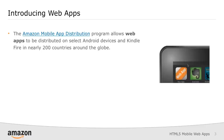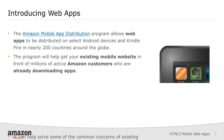For those not familiar, the Amazon mobile app distribution program is available in nearly 200 countries around the globe. It allows you to submit Android apps for both Android devices and Kindle Fire devices, as well as now web apps. So you can take your existing mobile website that you have today and put it in front of active Amazon customers who are already downloading apps. Your mobile website will appear as an actual app.